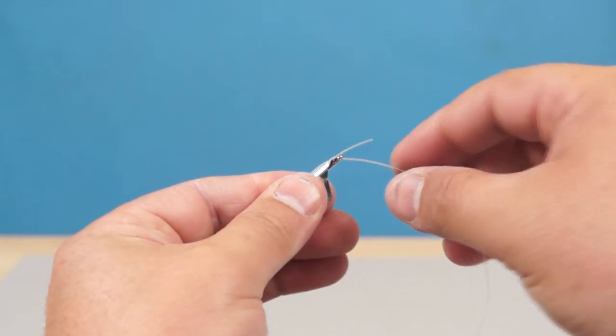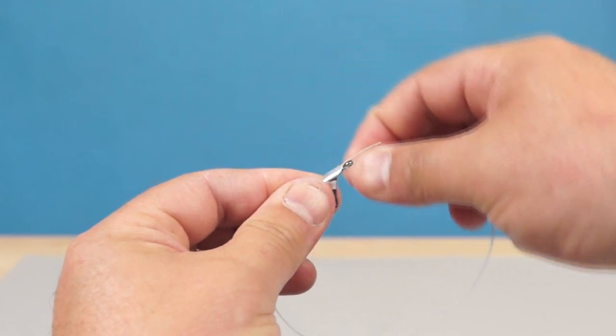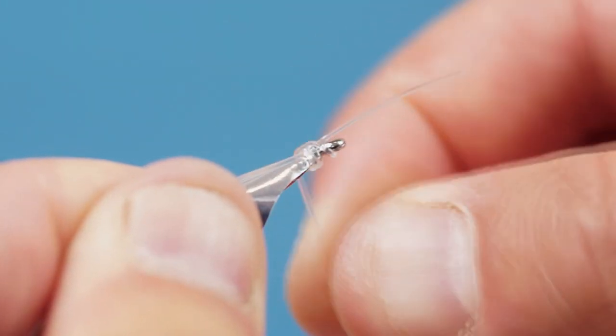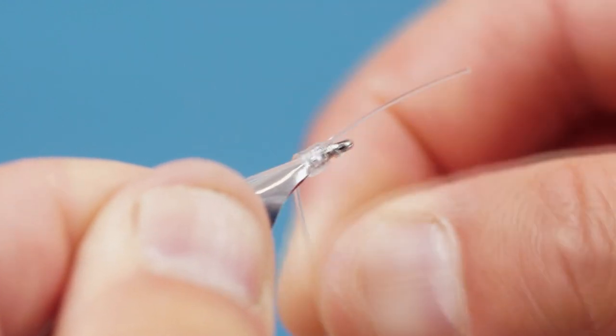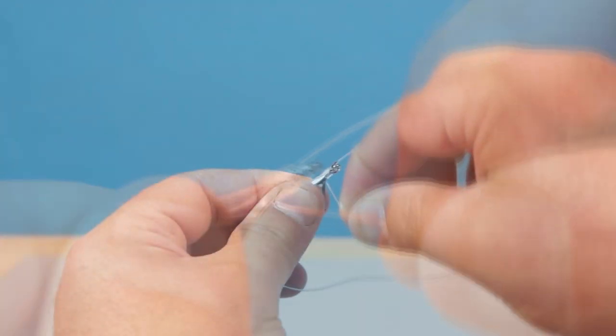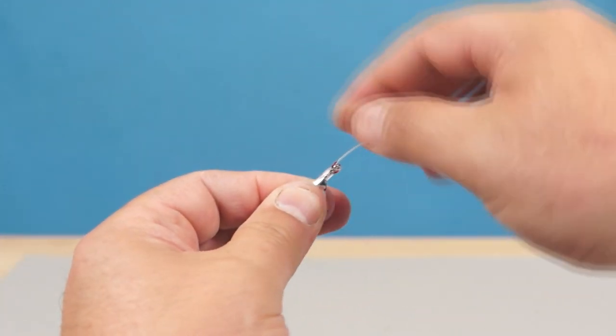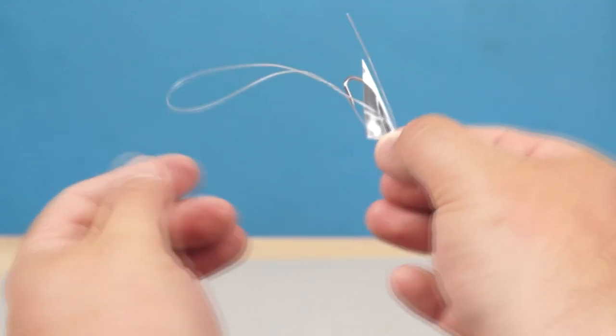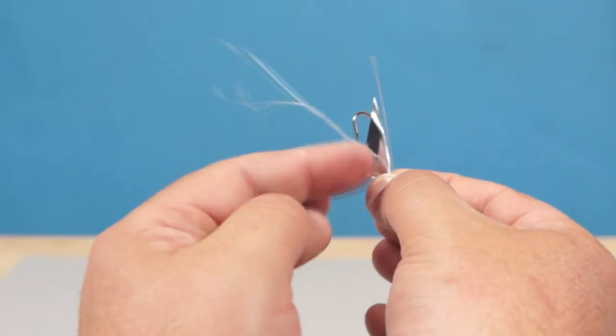Then I can wrap the loop around using just enough pressure to form 4-5 loose coils. With the wraps complete I can pinch it all together and make sure the loop is on the outside of the wings.